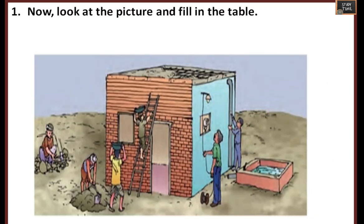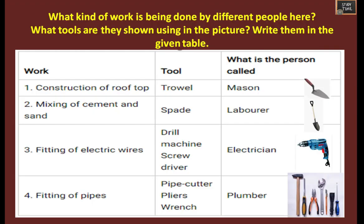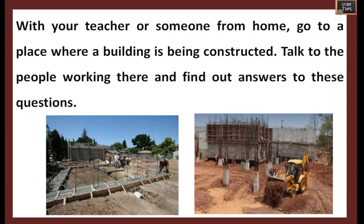Look at the picture and fill in the table: Work, Tool, and What is the person called? Construction of rooftop - trowel - mason. Mixing of cement and sand - spade - labourer. Fitting of electrical wires - drilling machine and screwdriver - electrician. Fitting of pipes - pipe cutter, pliers, and wrench - plumber.